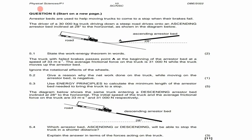We have question 5. It says arrester beds are used to help moving trucks come to a stop when the brakes fail. The driver of a 30,000 kg truck driving down a steep road drives onto an ascending arrestor bed inclined at 28 degrees to the horizontal, as shown in the diagram below.